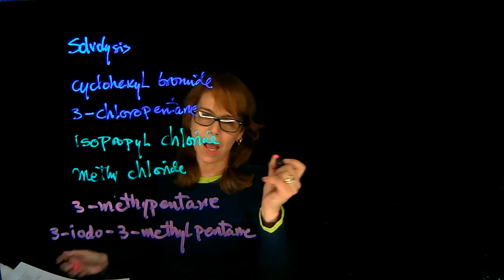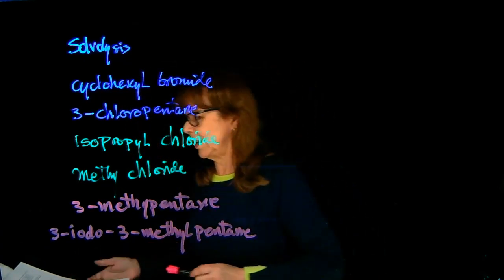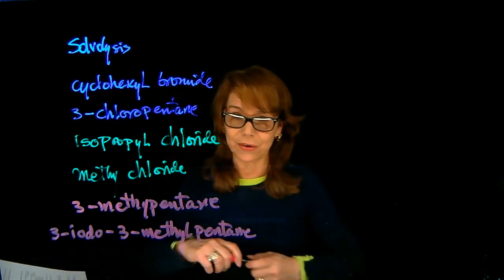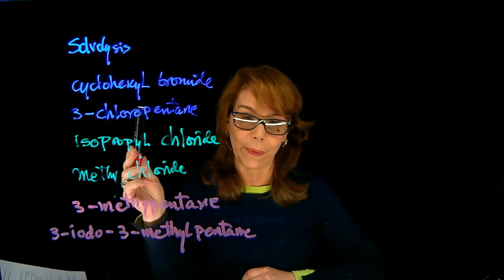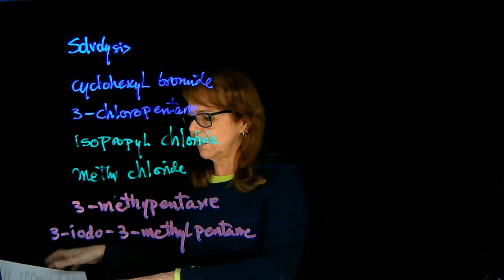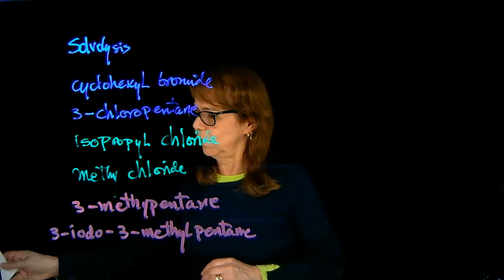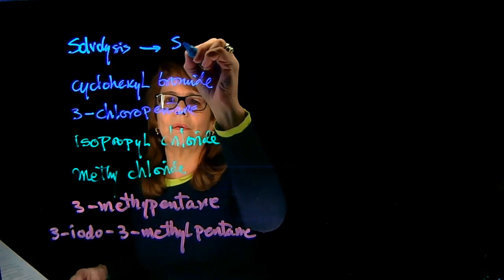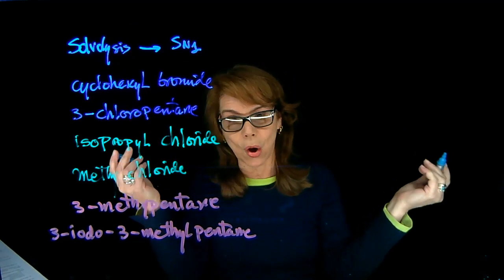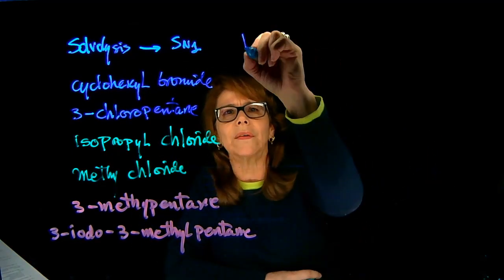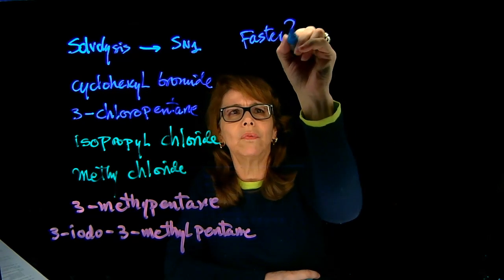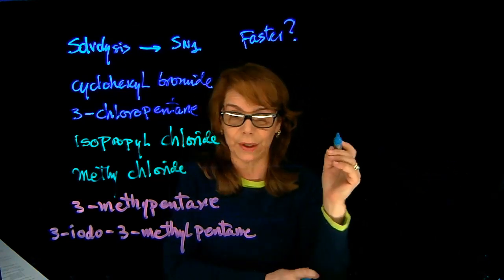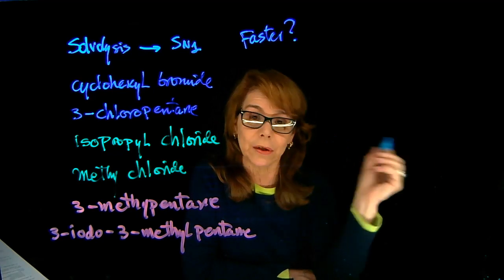Two important things. What is solvolysis? It's a reaction with the solvent — that reaction is an SN1 reaction. It's the ionization of these compounds followed by substitution. So solvolysis refers to the SN1 mechanism, which goes through a carbocation intermediate. Which one reacts faster depends on the structure — the more stable the carbocation, the faster the reaction, because the rate-determining step is the formation of the carbocation.